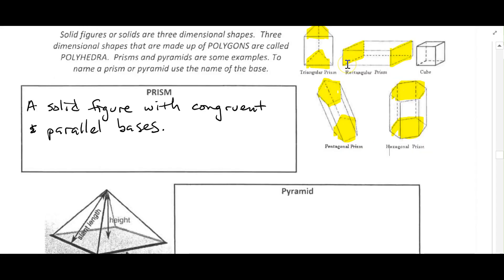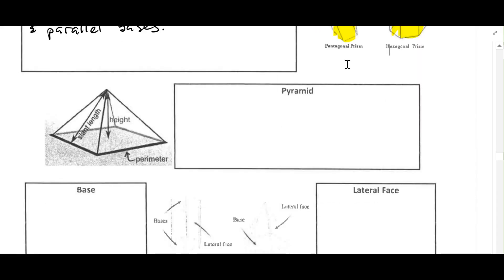That's our prism. Moving on to our pyramid. A pyramid is a solid figure with a polygon base and sides.